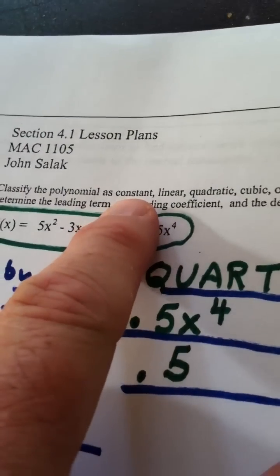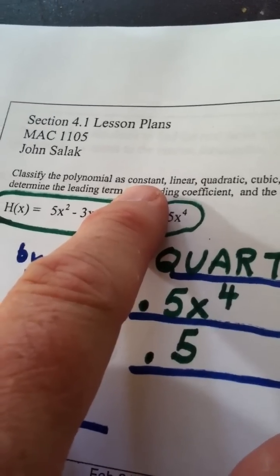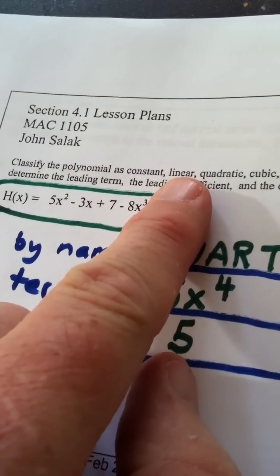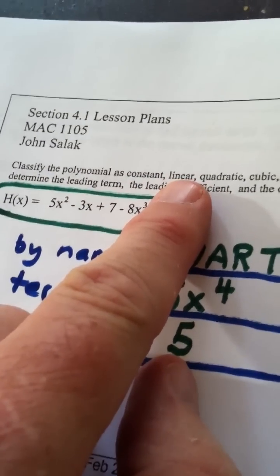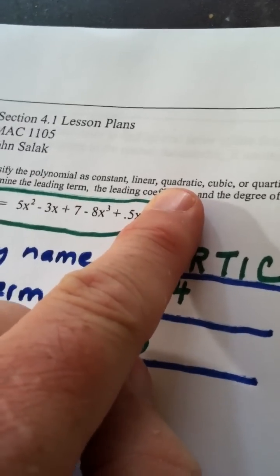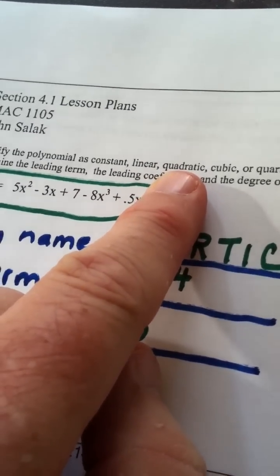Remember, a constant function would just be a number like f of x equals 4, and by the way, its degree is 0. A linear function, anything y equals mx plus b, has degree 1. Quadratic is degree 2.